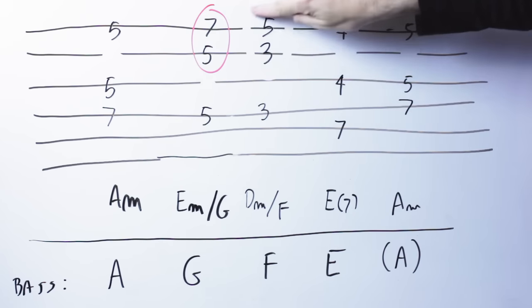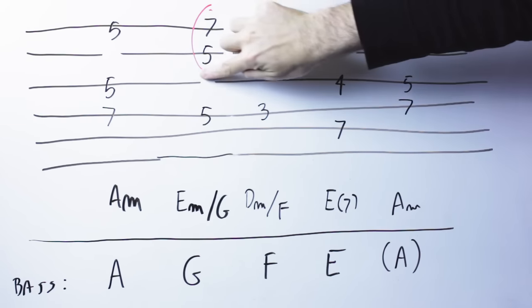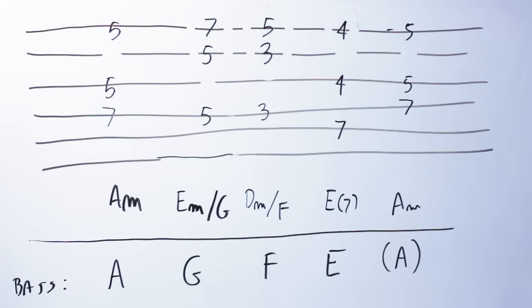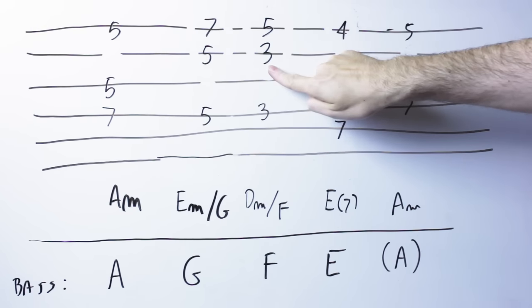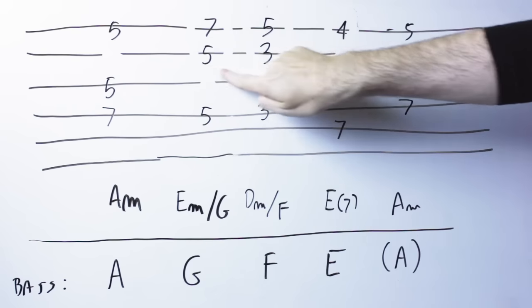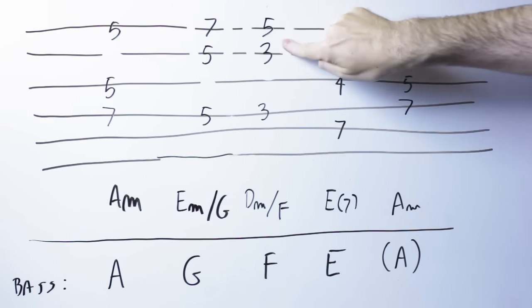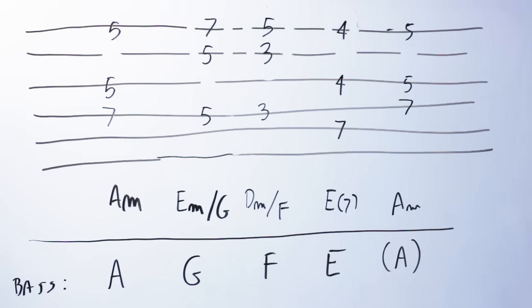So what will Bach do, or for that matter any Baroque musician? Well, there is a little loophole, if you want, in the parallel fifth rule. And that is that they did find perfect fifths objectionable. But if the second fifth is not perfect, so it's a diminished fifth, then it will sound perfectly fine to their ears.